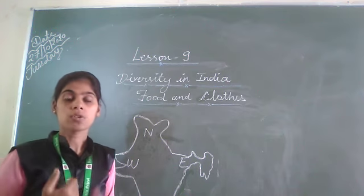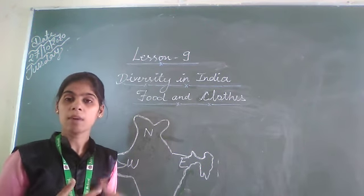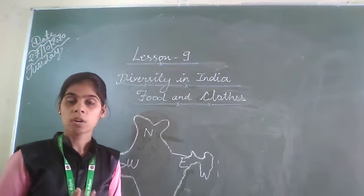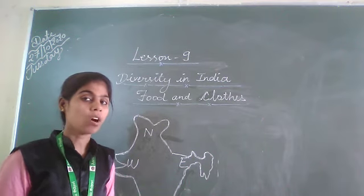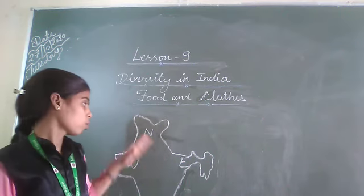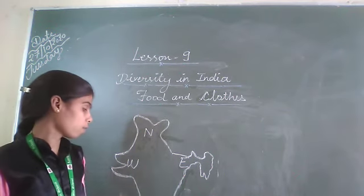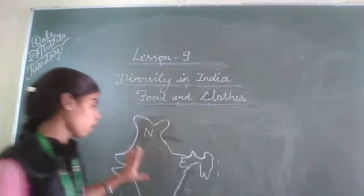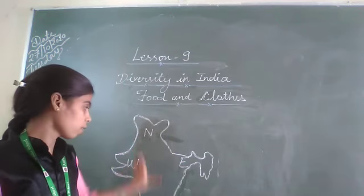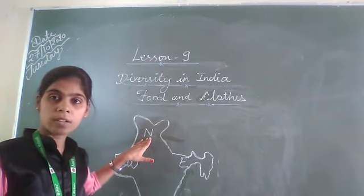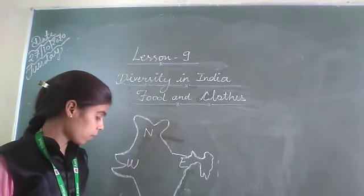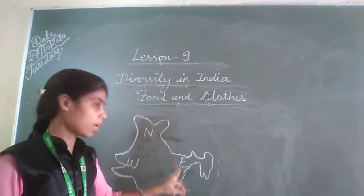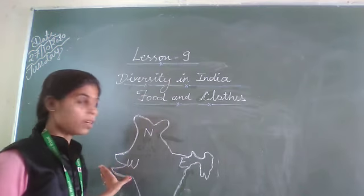There are different reasons why India has different foods — because the climate and soil are different. Here you can see the map of India, and we are divided into four directions: the north, the south, the east, and the west.